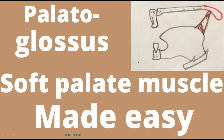Welcome to Logic Medico. Today's topic is palatoglossus, a muscle of the soft palate. This is a cut section of the oral cavity — here is the roof of the oral cavity, the hard palate, this is the soft palate, this is the tongue, and this is the palatoglossus.